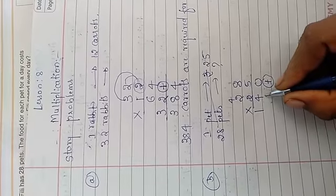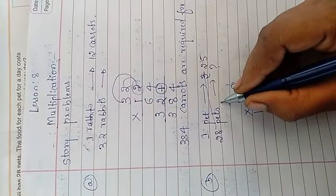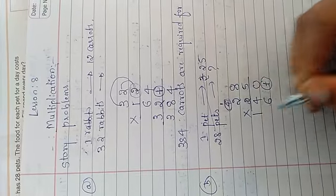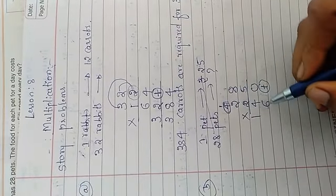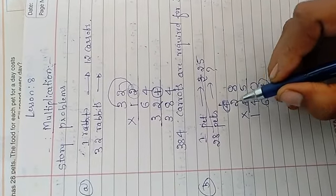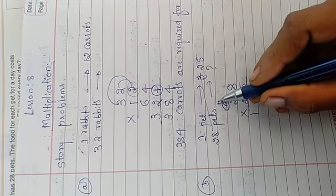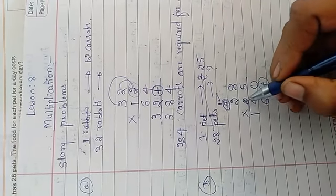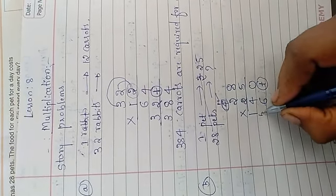2, 8's are 16. 6 carry 1. This is finished. Just round off that one. 2, 8's are 16. 6 carry 1. 2, 2's are 4. Now, don't add 4. You just do 1 plus 1. 2, 2's are 4. 4 plus 1 is 5.